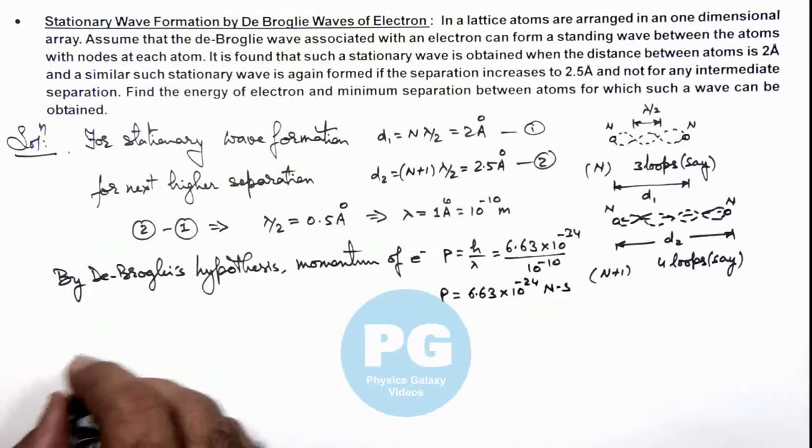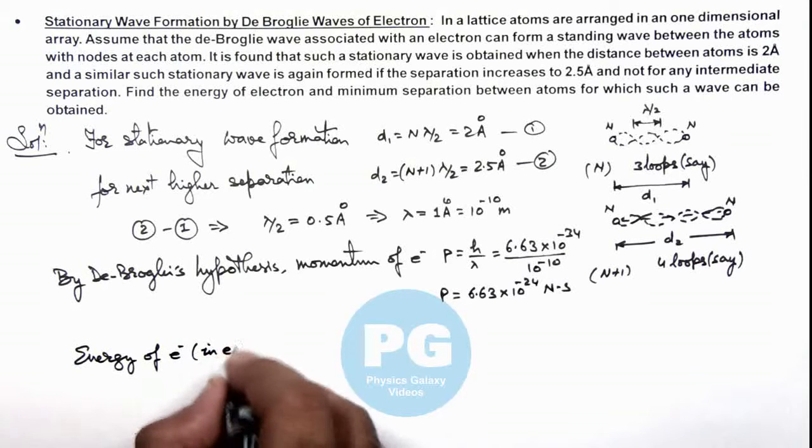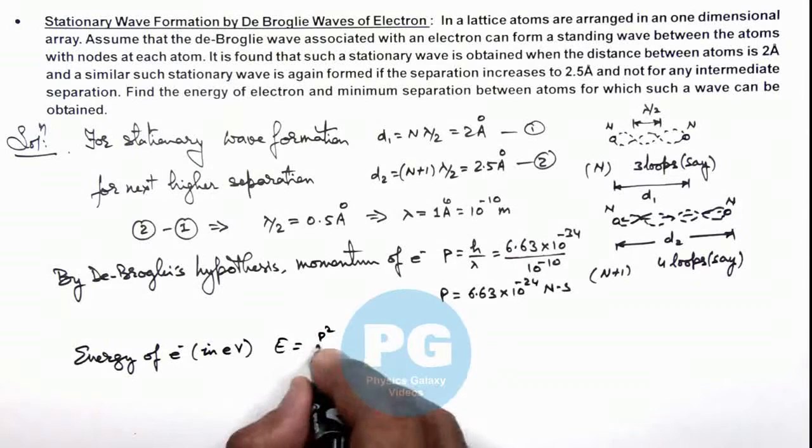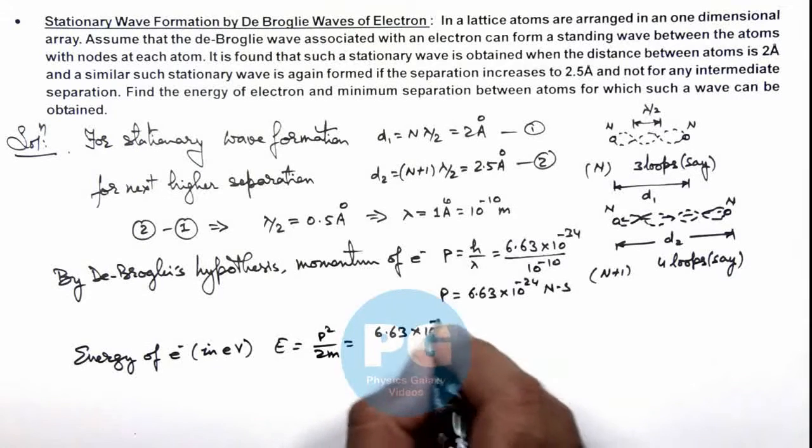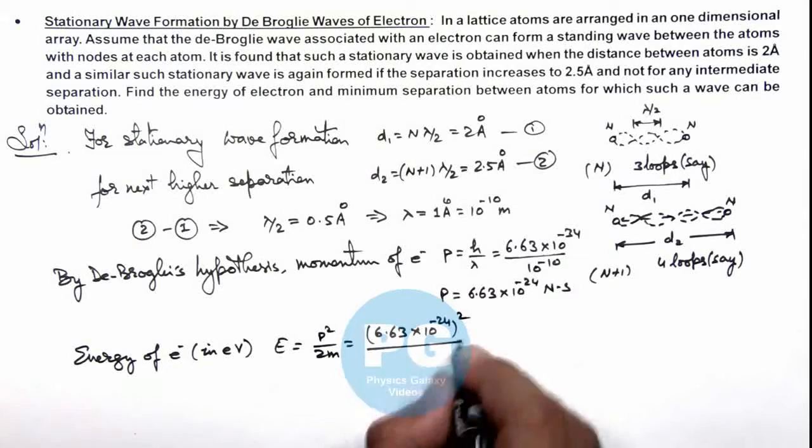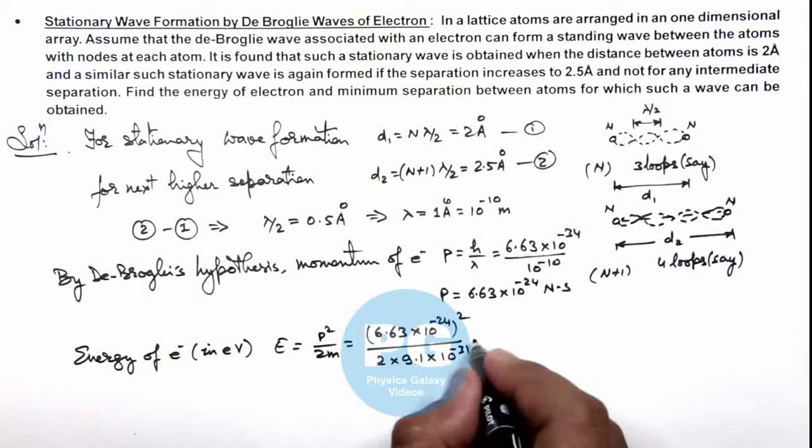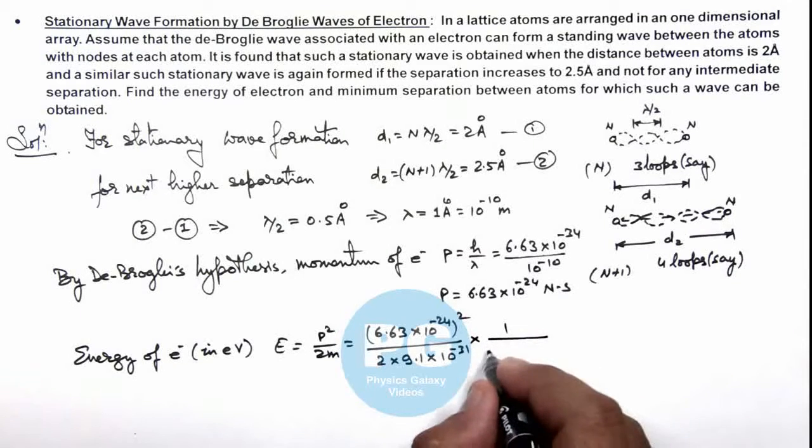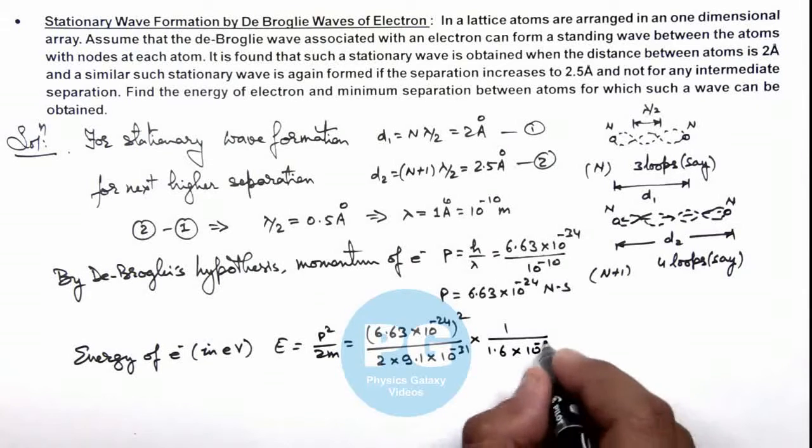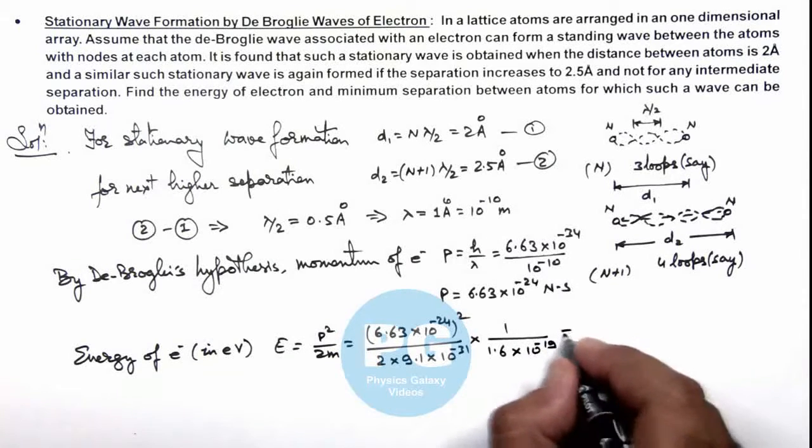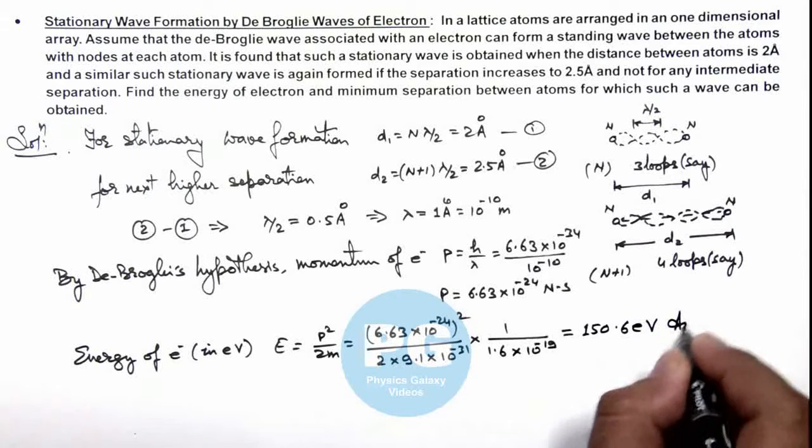Corresponding to the momentum, if we calculate the energy of the electron in electron volts, this can be given as p²/2m. We should also divide by the electron charge to convert it to electron volts, that is 1/(1.6×10⁻¹⁹). So the numerical value of the electron energy we are getting is 150.6 electron volts, which is the result of this problem.